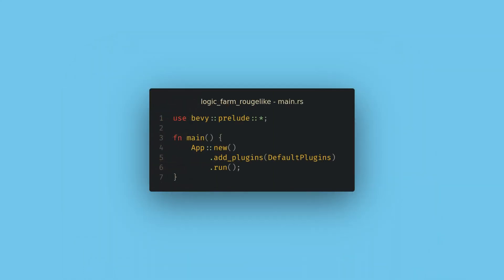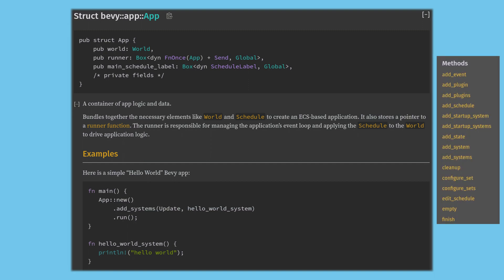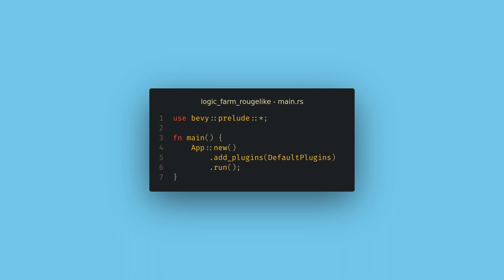First up, we add a `use bevy::prelude::*` statement to the top of our module. This imports all of the core features of Bevy and is something I always use for convenience. Now in the main function, we can create our Bevy app. The Bevy App is the core struct of Bevy and will handle running your game and calling all of our systems. Anything you want your game to do must be specified with the app struct. App follows a builder pattern, so after calling `App::new()` we can add systems by chaining function calls onto it.